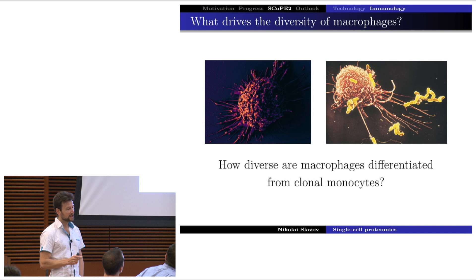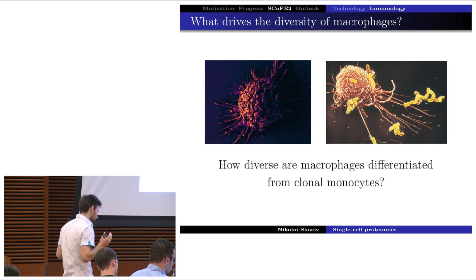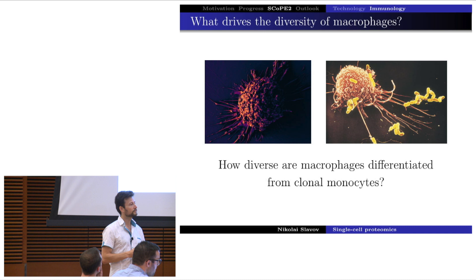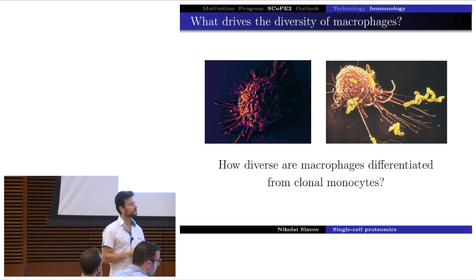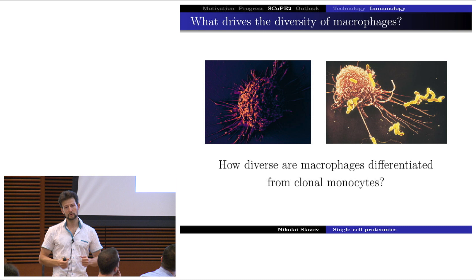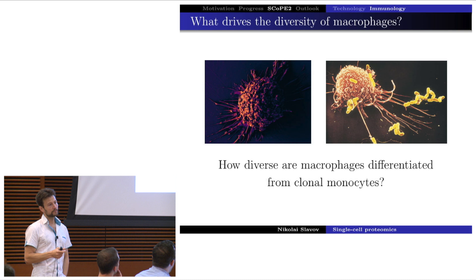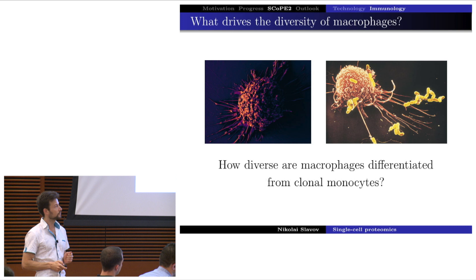Now for some biology. We studied why macrophages are different. Macrophages are important immune cells resident in all tissues that can be pro- or anti-inflammatory, can eat bacteria or promote angiogenesis and cancer growth. We know differences can be induced by polarizing cytokines, but we were interested in what happens when you start from a homogeneous culture of monocytes — blood cells about 10 microns in diameter — and let them differentiate without polarizing cytokines, stimulating with PMA into macrophages.